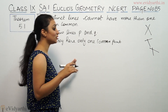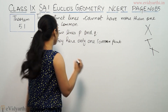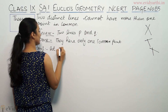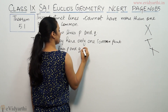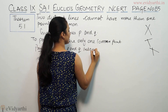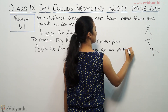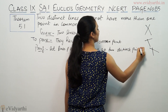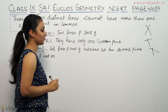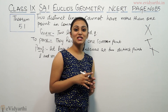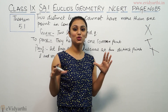Now let us prove this. Let lines P and Q intersect at two distinct points L and M. Now we have two points of intersection. So this means we have two different, two distinct points.